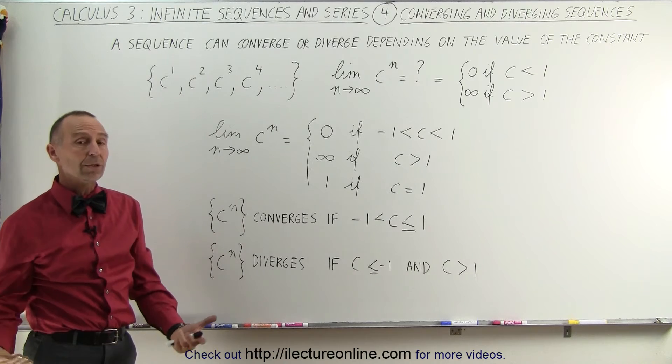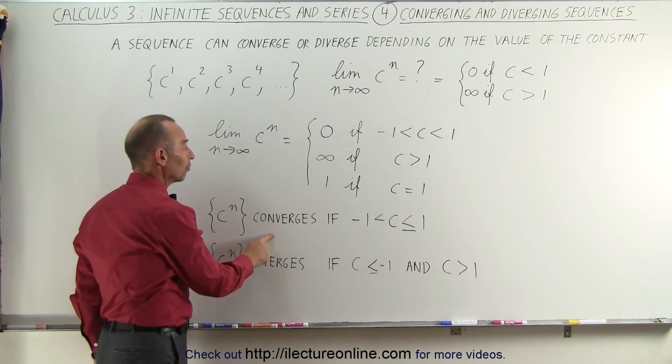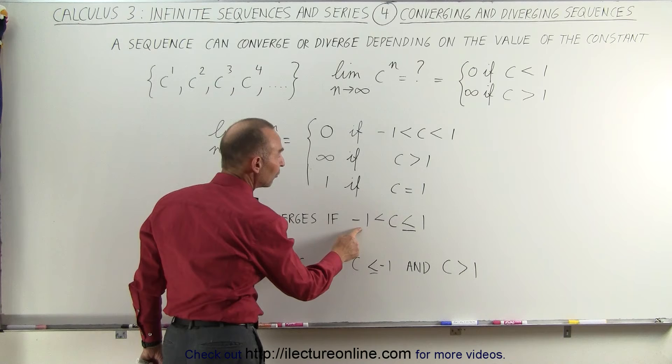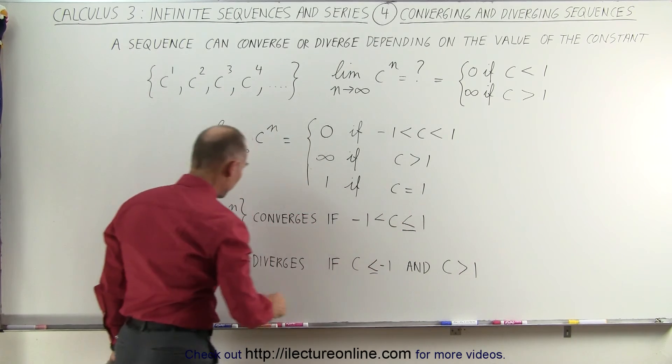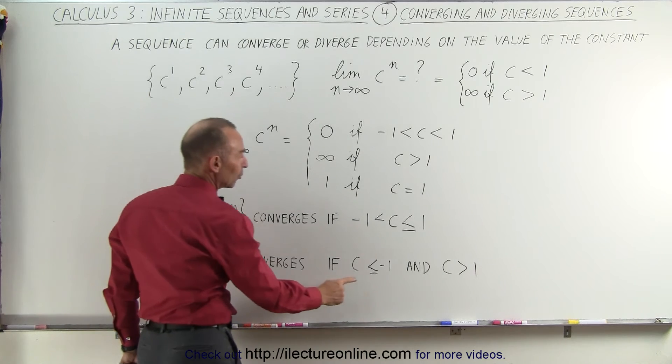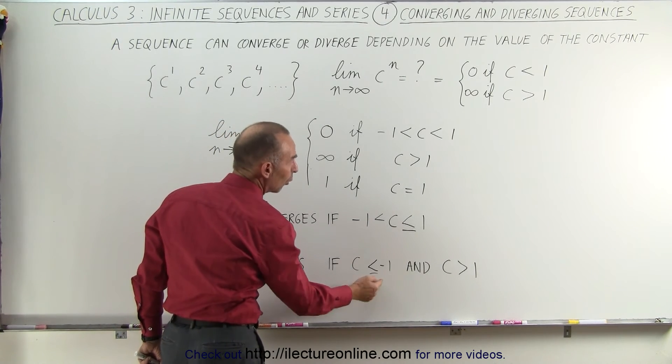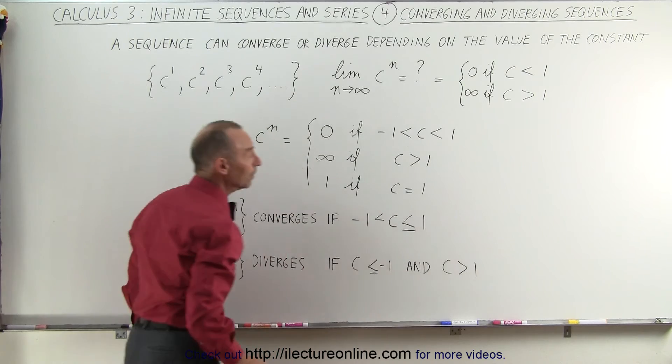So in the end we can conclude that c to the n converges for values between negative 1 and positive 1, including positive 1, but it diverges for values when c is less than or equal to negative 1, and if c is larger than 1.